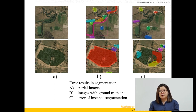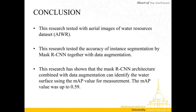This picture demonstrates errors from instance segmentation. Row 1 cannot segment the area covered with vegetation and row 2 is the area covered by unwanted foliage. To sum up, this research tested with aerial image of water resource dataset AIWR and tested the accuracy of instance segmentation by Mask R-CNN together with data augmentation. This research has shown that Mask R-CNN combined with data augmentation can identify the water surface using the MAP value for measurement, with MAP up to 0.59.